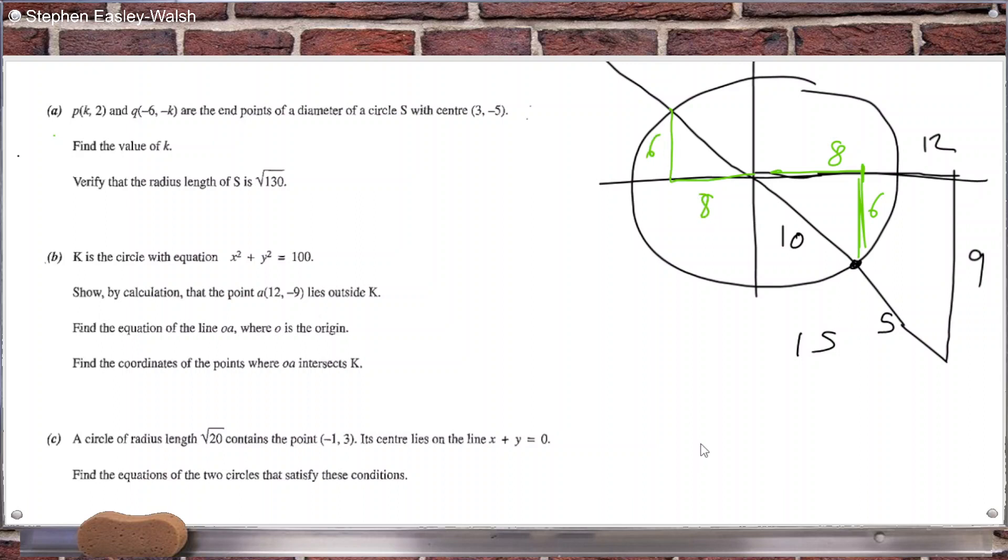8 and 6. So the points would be 8 minus 6 and minus 8, 6.